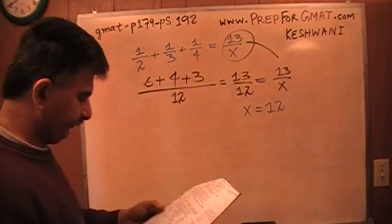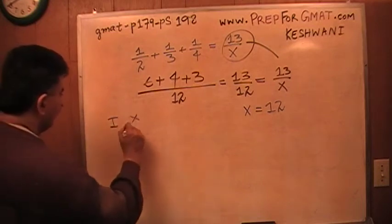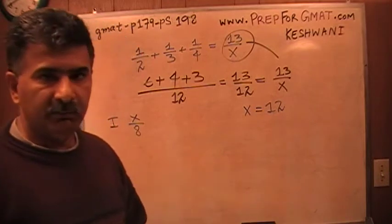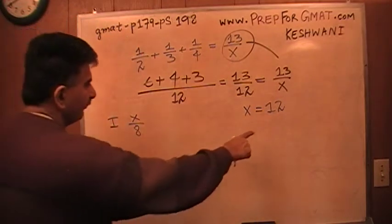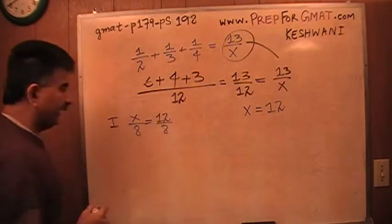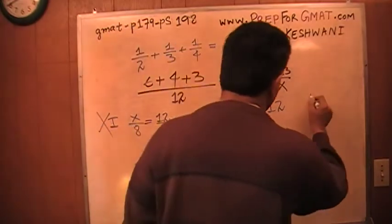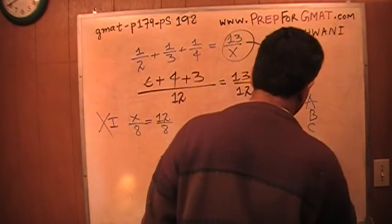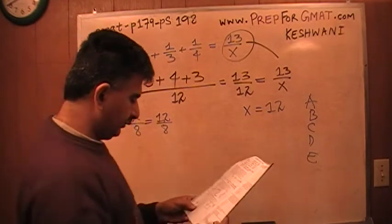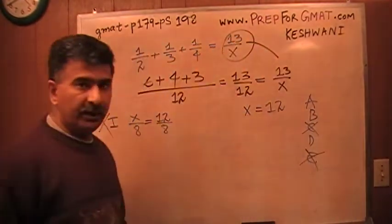Let's look at the first statement. Statement 1 says X over 12. We just found that X is 12, so that's 12 over 12. Wait — is 12 over 8 an integer? Of course it's not. Statement 1 is not true. Let's look at the answer choices. Anything that contains statement 1, I'm going to cross it out. So that rules out C and that rules out E.